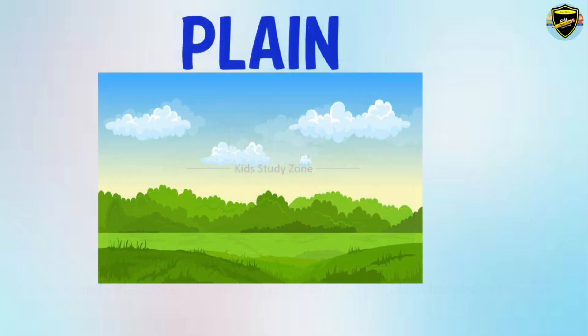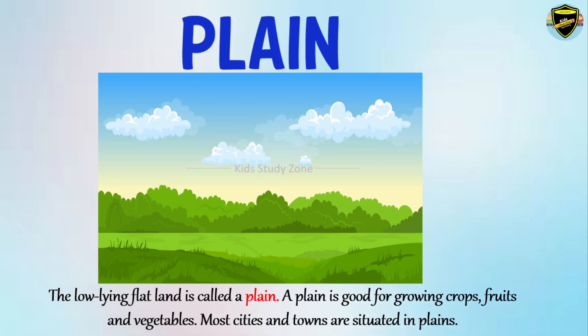Plain. The low-lying flat land is called a plain. A plain is good for growing crops, fruits and vegetables. Most cities and towns are situated in plains.